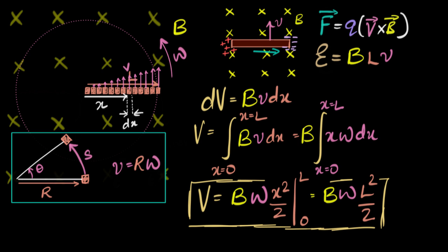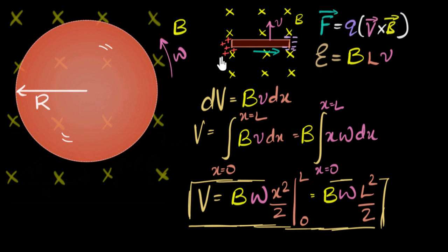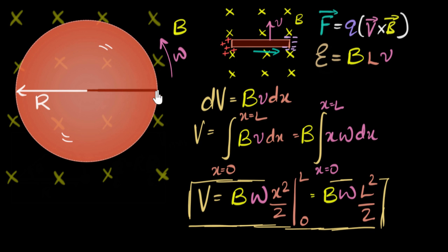Shall we quickly try one more problem? Very similar: we have a constant uniform magnetic field, and instead of a wire, we now have a disk of radius R that is spinning. The question is: what is the potential difference between the center of that disk and the edge? We can redo the integration, but there's another way: consider any tiny radial piece of the disk — that piece is doing exactly the same thing the rod was doing, spinning about its end. So the potential difference for that piece is B·omega·R²/2.